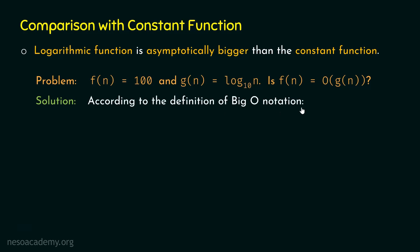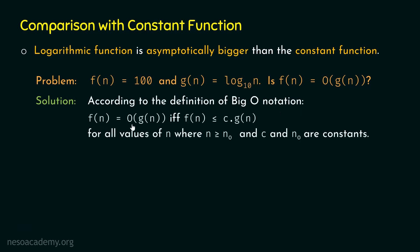According to the definition of Big-O notation, f(n) = O(g(n)) if and only if f(n) ≤ c · g(n) for all values of n where n ≥ n₀, and c and n₀ are constants. So for some constant c, if f(n) ≤ c · g(n), then we can conclude f(n) = O(g(n)), and this must hold for all n ≥ n₀.